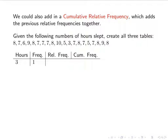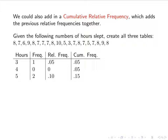There is one person who slept 3 hours. One divided by 20 is 0.05. The cumulative frequency so far is just that relative frequency: 0.05. For 4 hours, there are none — relative frequency of zero — and adding zero to the previous cumulative frequency keeps it at 0.05. For 5 hours, there were two people, giving a relative frequency of 0.10, and the cumulative becomes 0.15. For 6 hours, there was one person: 1 divided by 20 is 0.05, and 0.15 plus 0.05 gives 0.20.